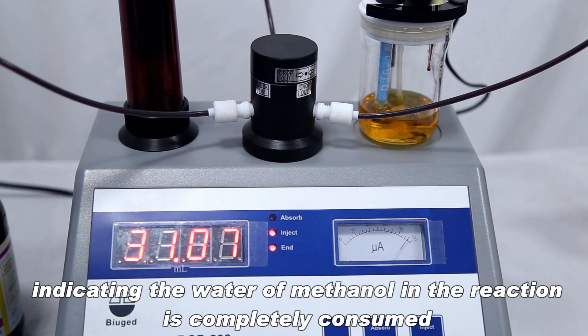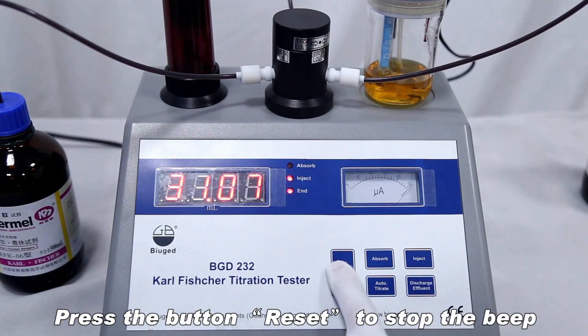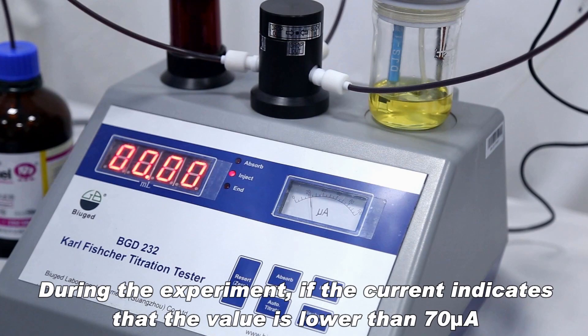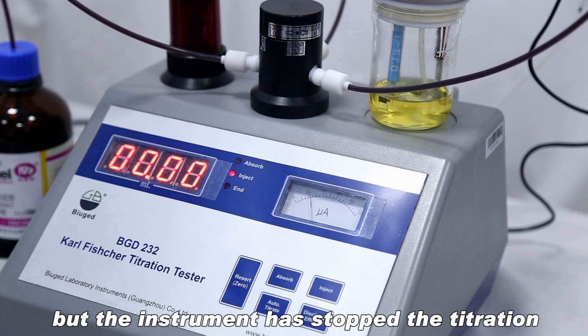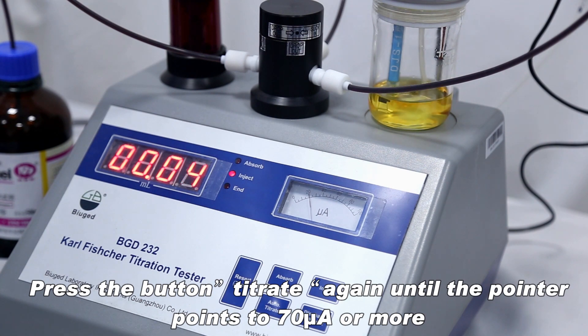Indicating the water of methanol in the reaction is completely consumed, press the button reset to stop the beep. During the experiment, if the current indicates that the value is lower than 70 µA but the instrument has stopped the titration, press the button titrate again until the pointer points to 70 µA or more.